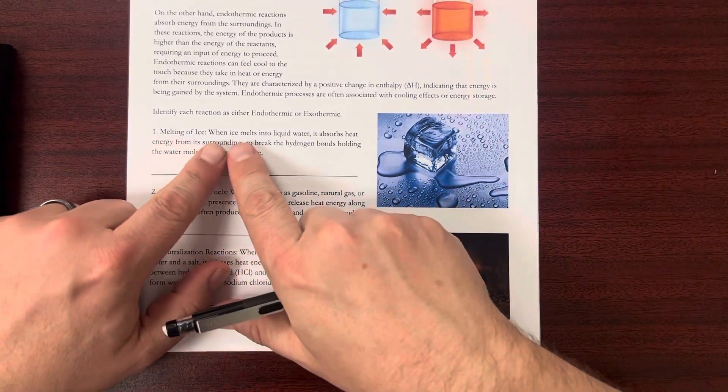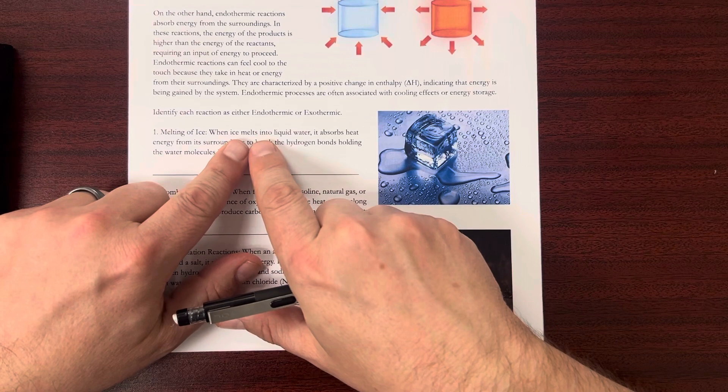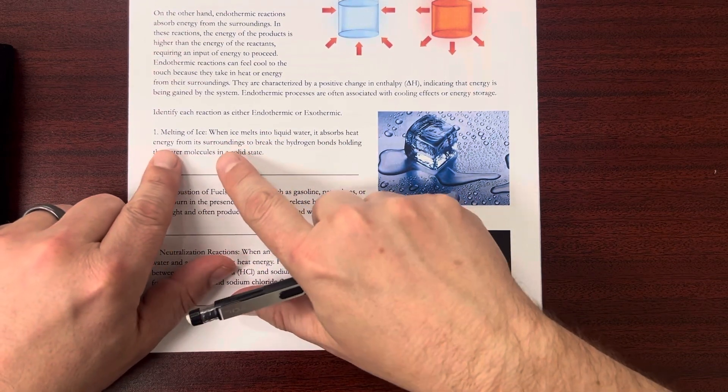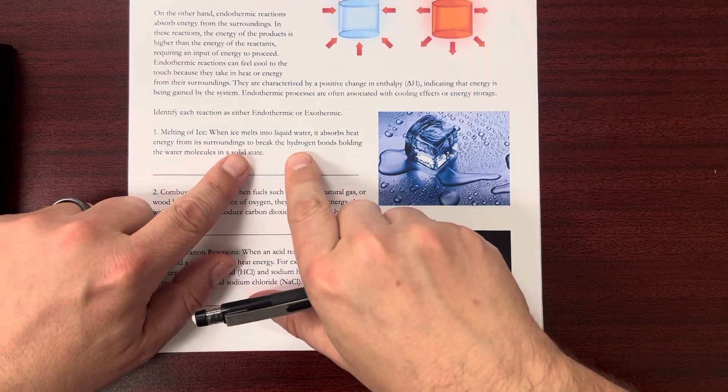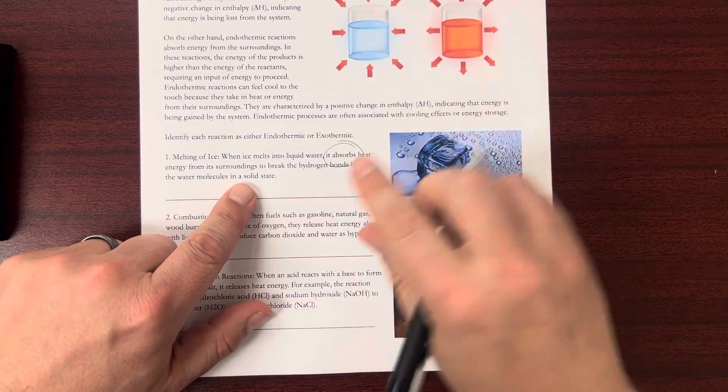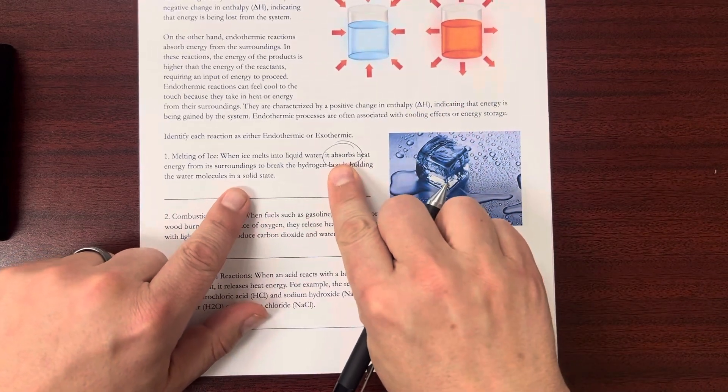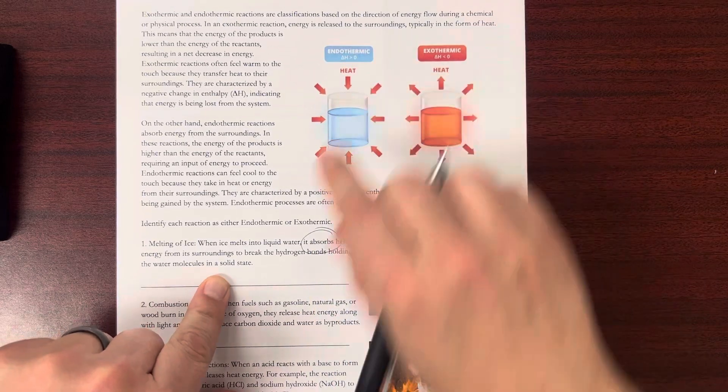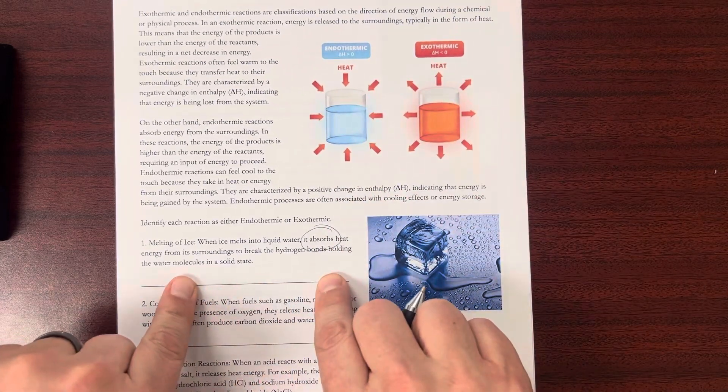So melting ice. When ice melts into liquid water, it absorbs heat energy from its surroundings to break the hydrogen bonds holding the water molecules into a solid state. The important part is the absorbs. So if it absorbs energy, it is endothermic. And you just write endothermic right there.